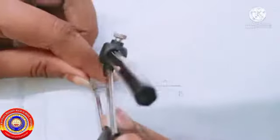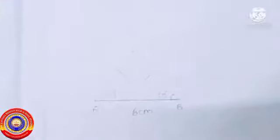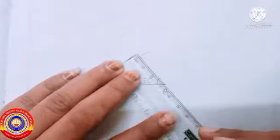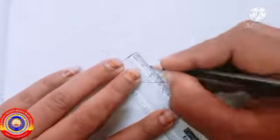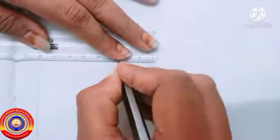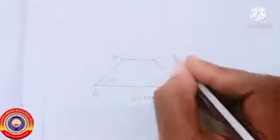Place the compass at point A and draw an arc of radius three centimeter, then place the compass at point B and draw an arc of radius three centimeter. Darken the dotted lines which are three centimeter long. Finally, draw DC and complete the trapezium, and erase the unnecessary lines.